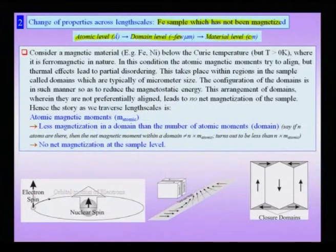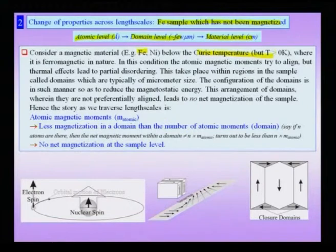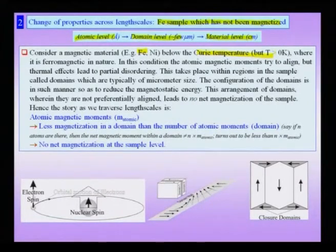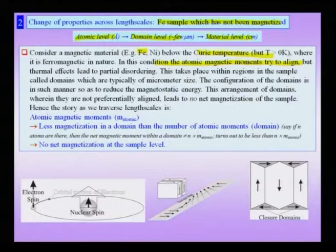Let us consider a magnetic material — iron is the example chosen — and we are below the Curie temperature. Below the Curie temperature, we know that the material behaves like a ferromagnet, and when you heat the material above the Curie temperature, it becomes a paramagnet. Therefore, we are talking about the ferromagnetic condition of the iron sample. In this condition, the atomic magnetic moments try to align within a region called the single thermal domain, but this tendency for alignment is constantly fighting against the thermal disordering effects which are always present.